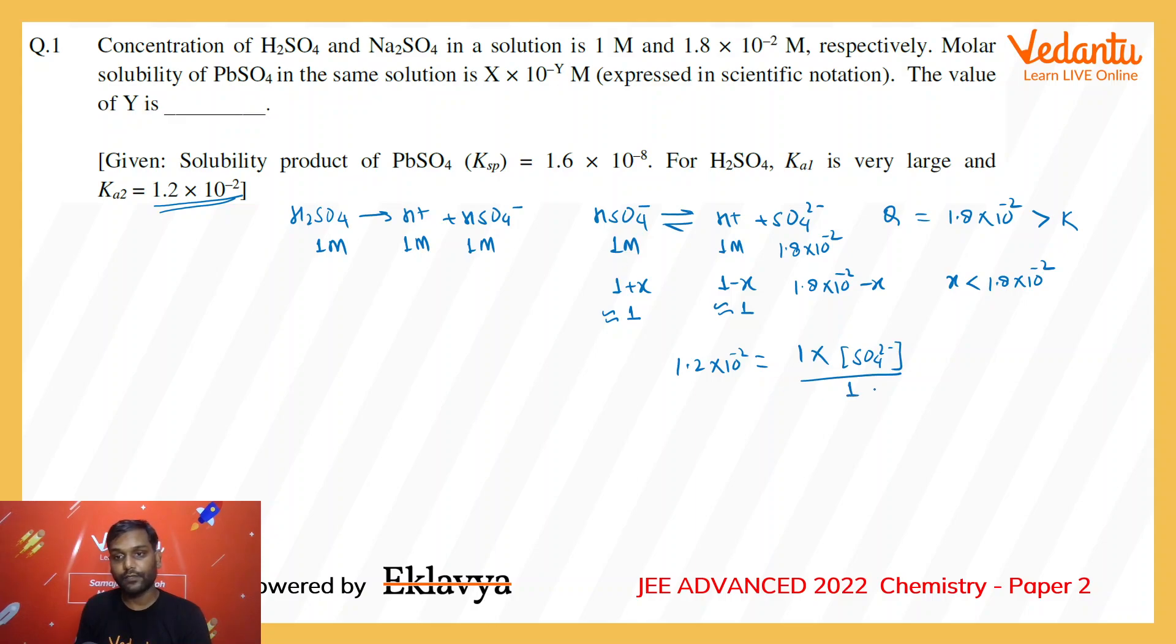From this the sulfate ion concentration comes out to be 1.2 × 10^-2.